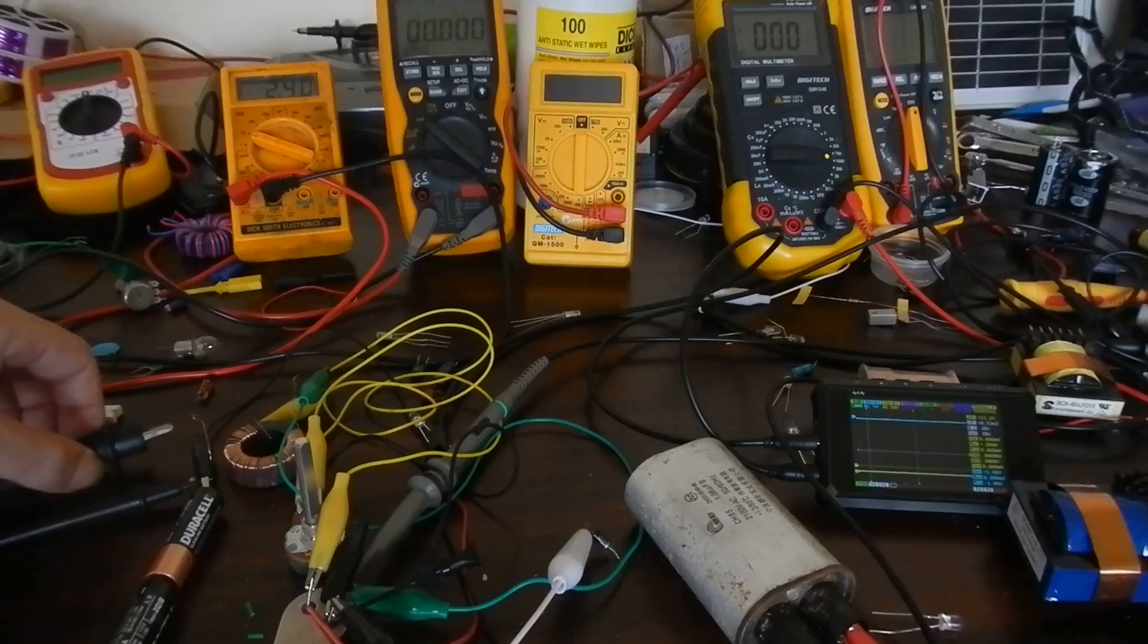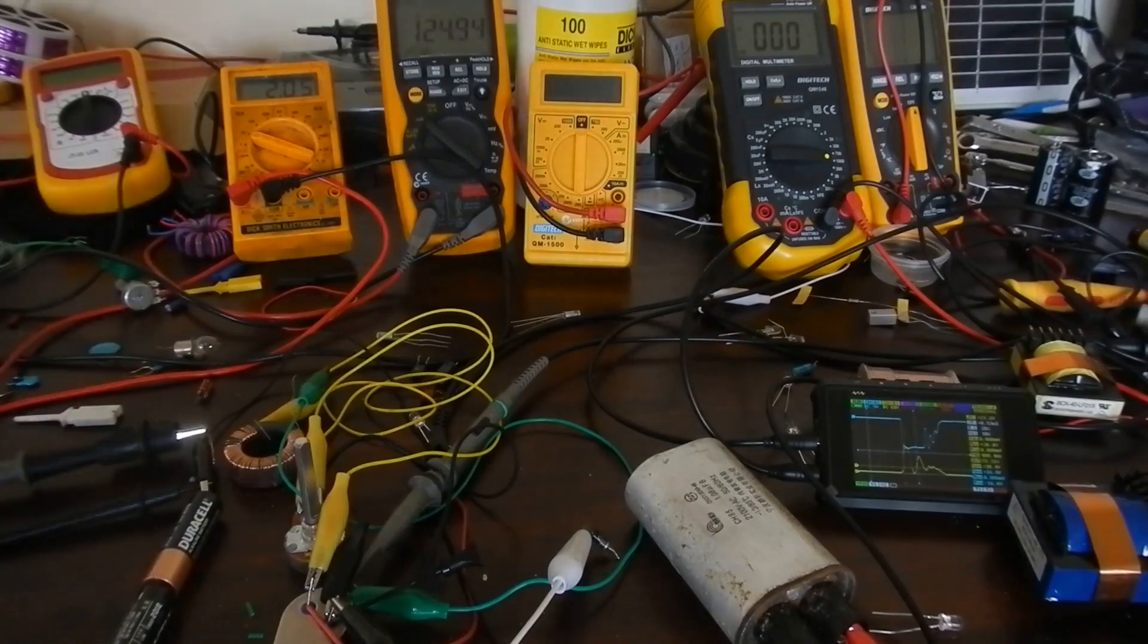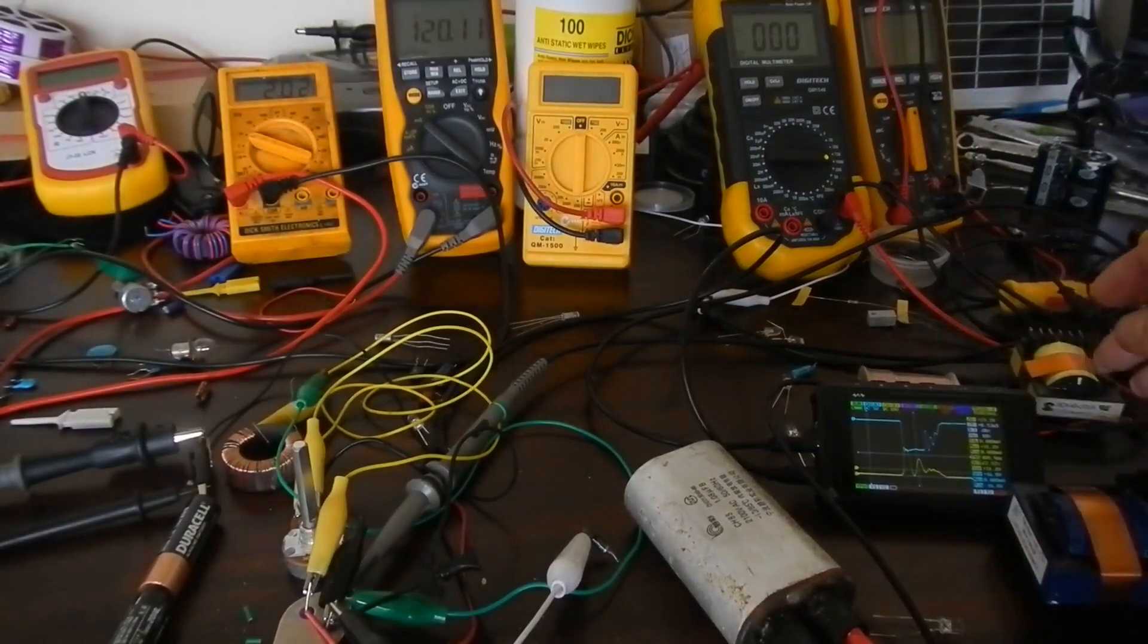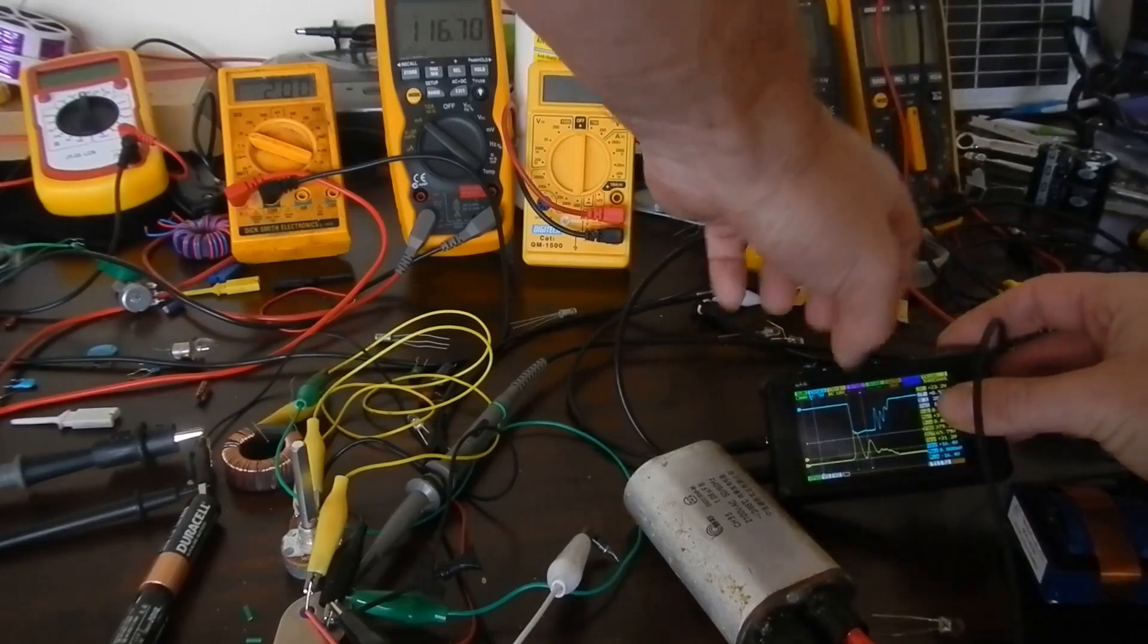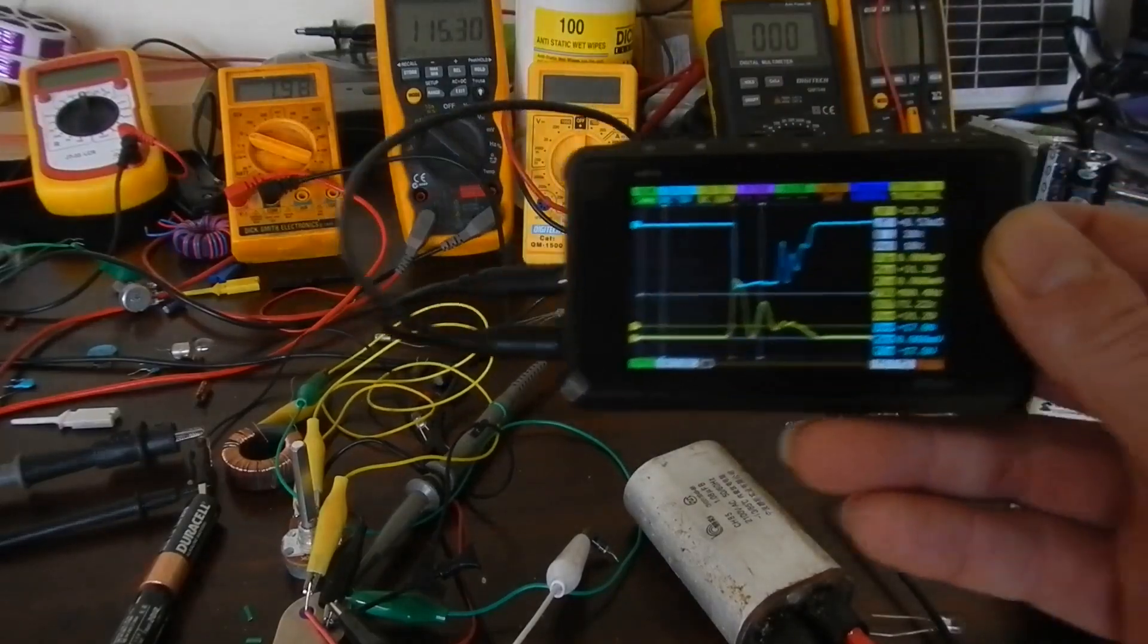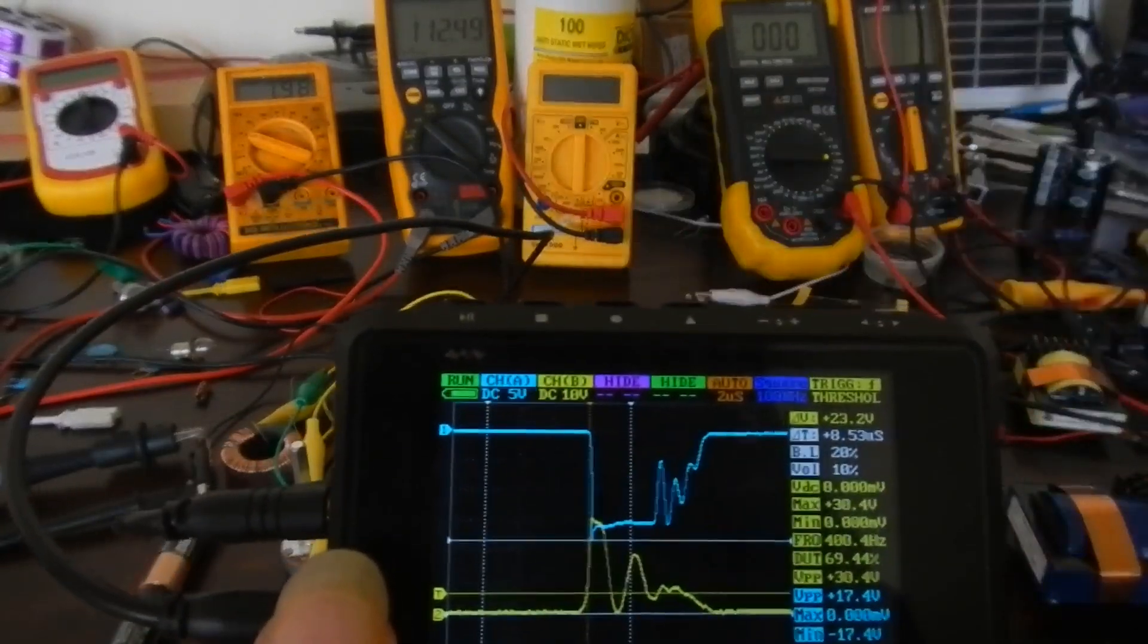So let's fire her up and see what we get. We've got up to 2.4 volts in our battery there. Now if you look closely at this scope, if I can get it out without crashing everything.